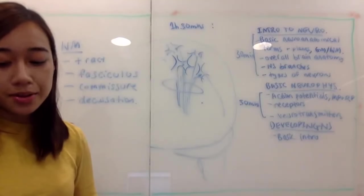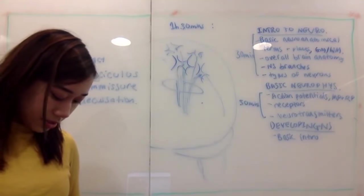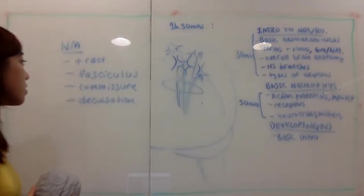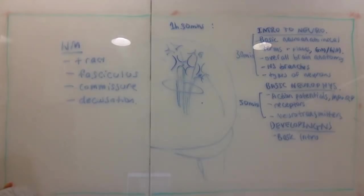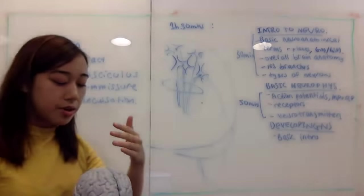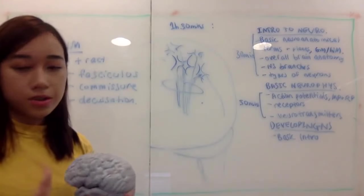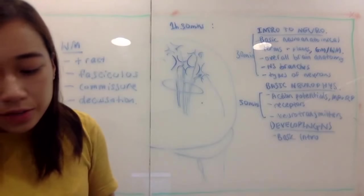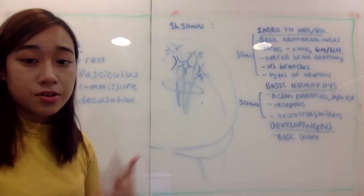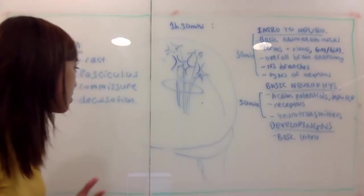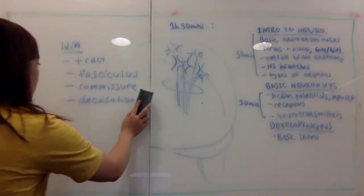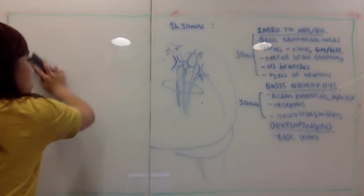There are other tracts that cross the midline, and those are called commissures and decussations — sets of white matter tracts that cross midline. If you come across terms like 'anterior commissure' or 'posterior commissure,' it just means it crosses midline and it's a white matter tract. Fasciculus is just another name for a tract.